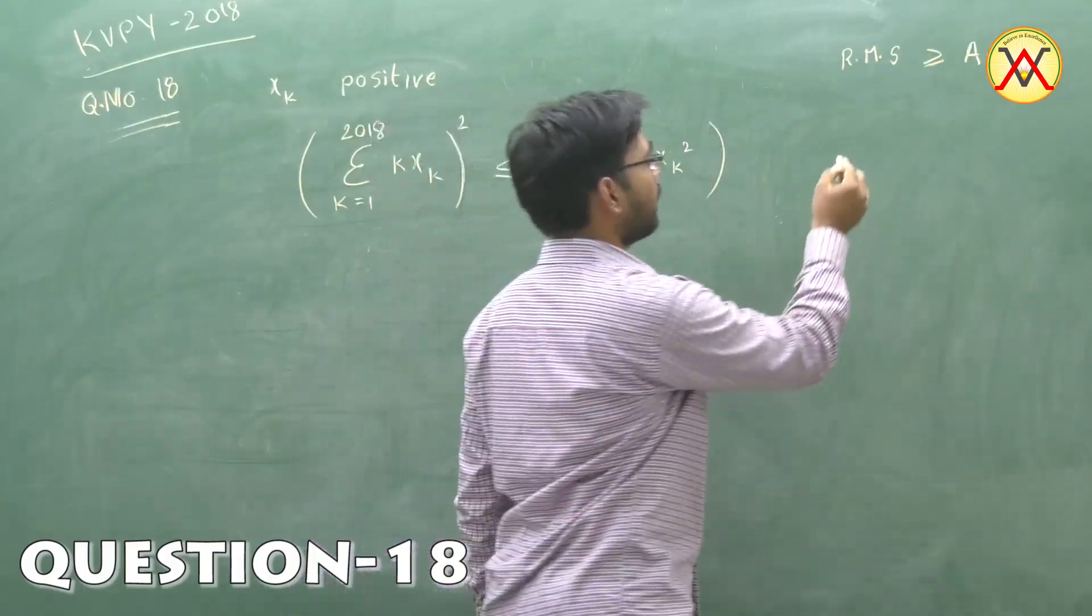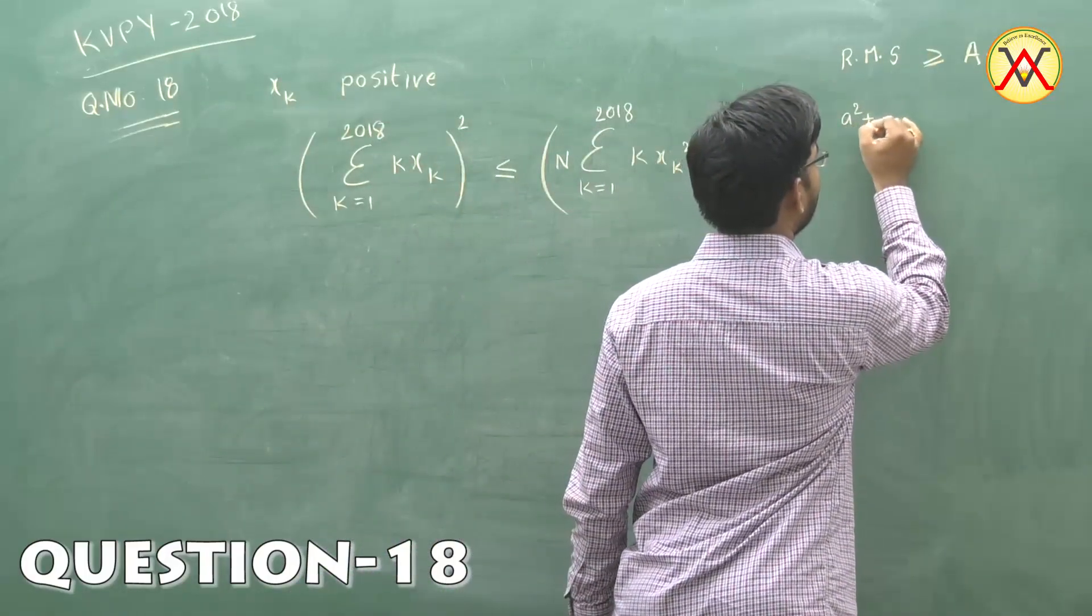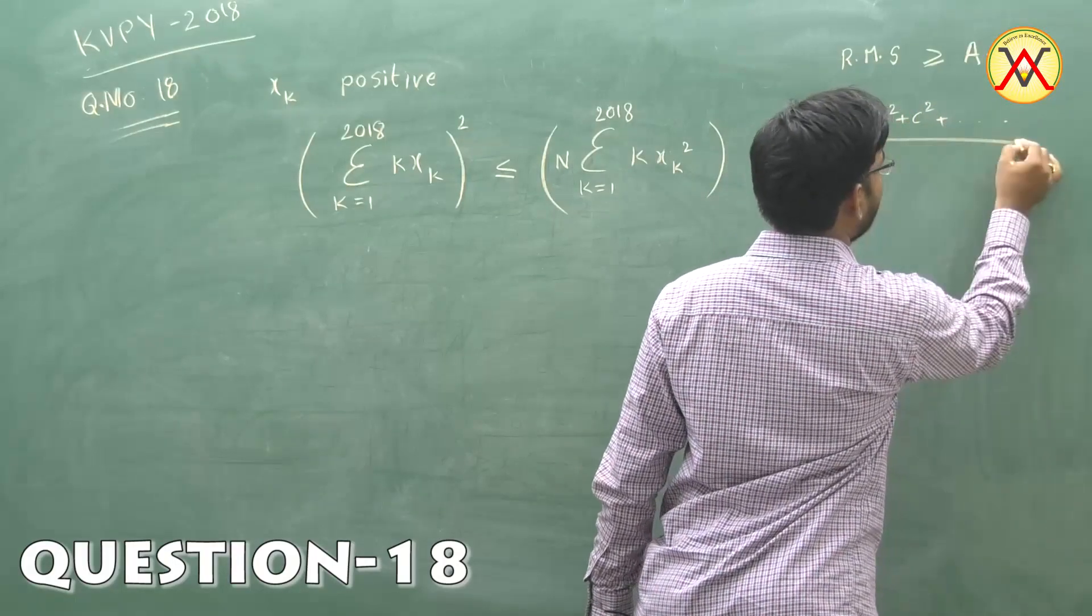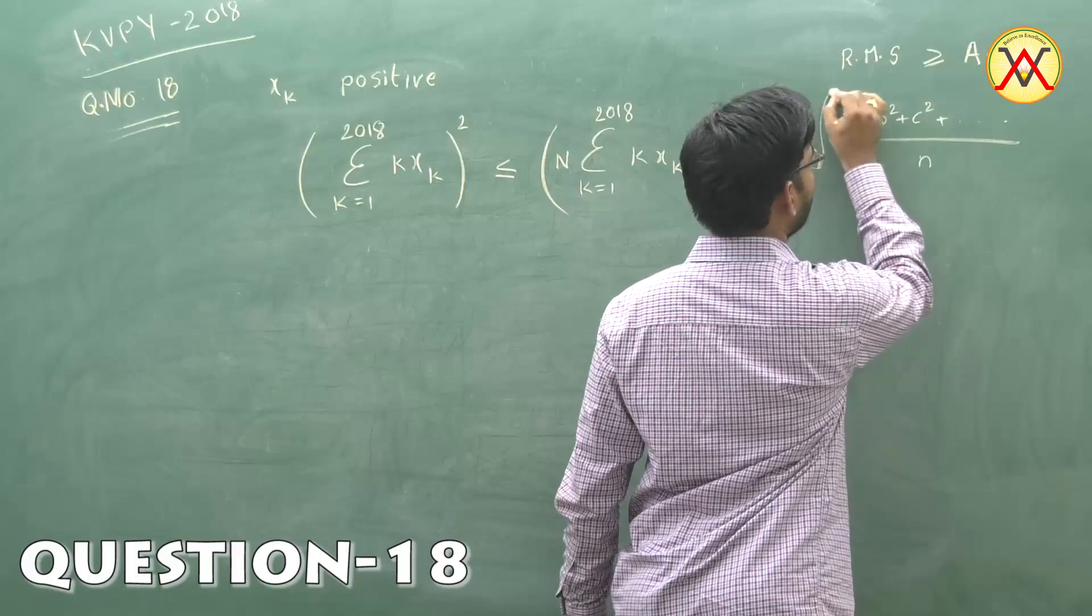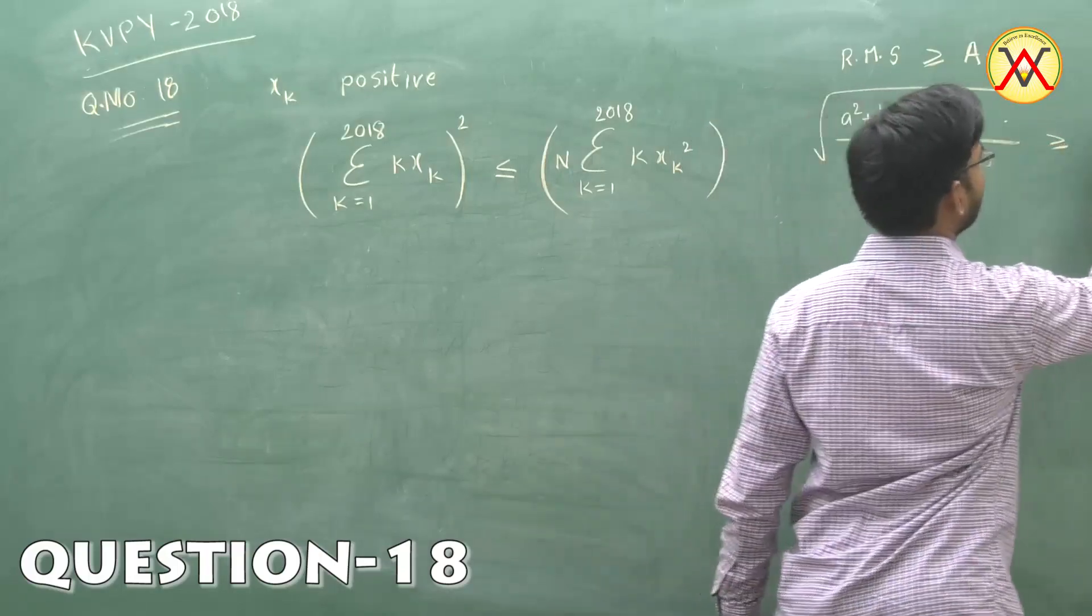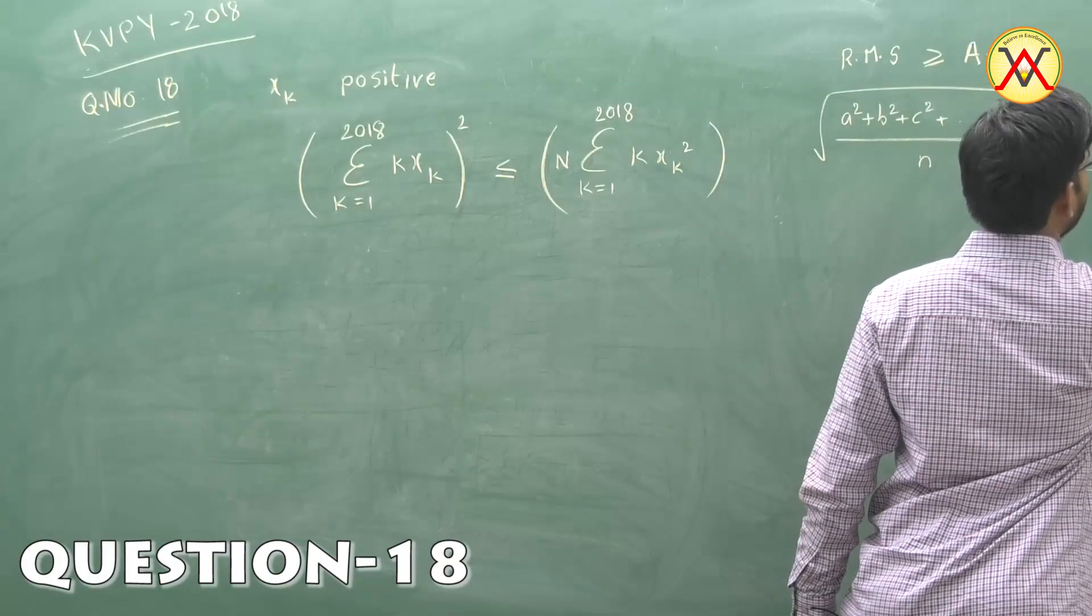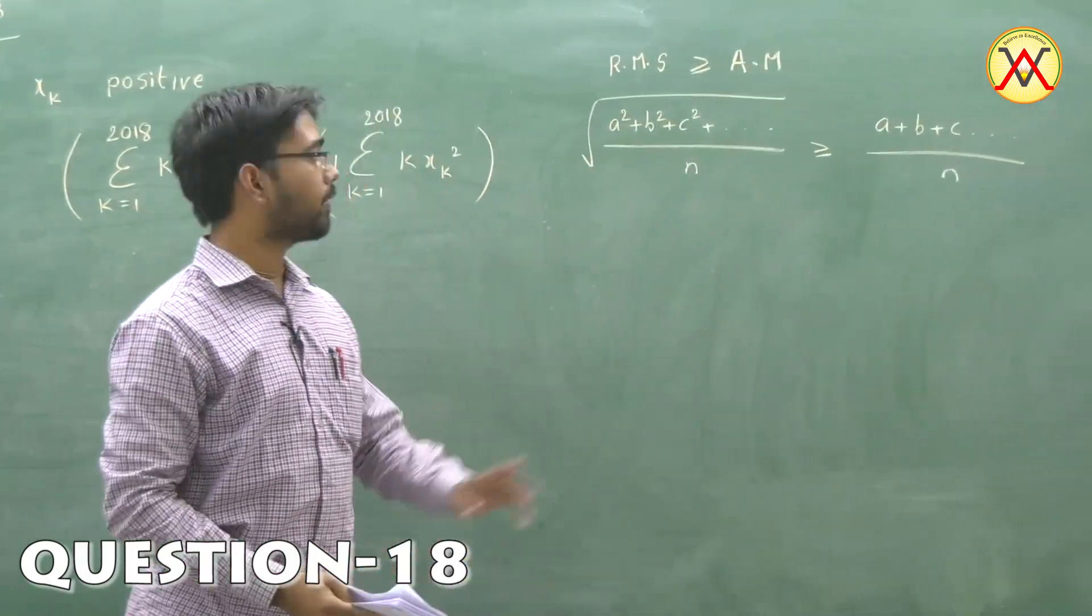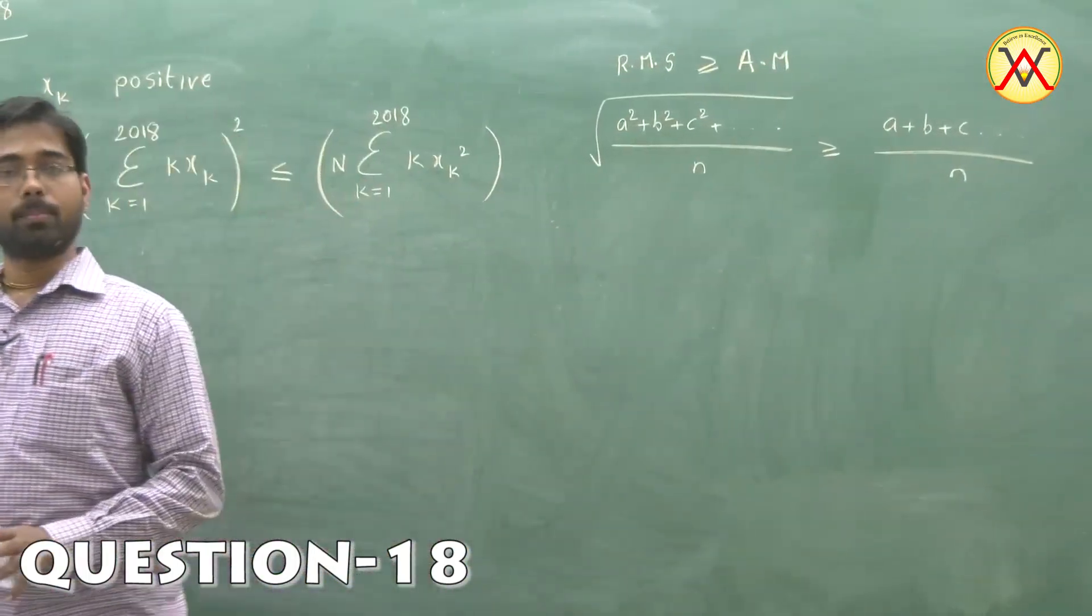That means we have √[(a² + b² + c² + ...)/n] ≥ (a + b + c + ...)/n, where n is the number of terms and a, b, c are all positive numbers.